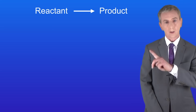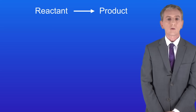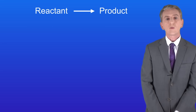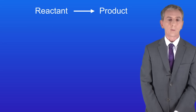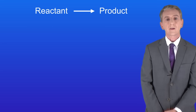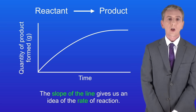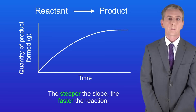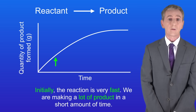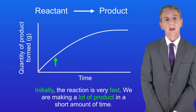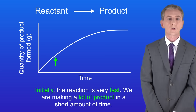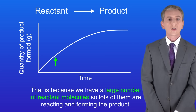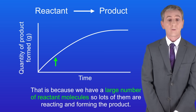I'm showing you a chemical reaction here. As you can see the reactant is turning into the product. If we plot the quantity of product formed against time then we get this graph. The slope of the line gives us an idea of the rate of reaction — the steeper the slope the faster the reaction. Initially the reaction is very fast, as we're making a lot of product in a short amount of time. That's because we've got a large number of reactant molecules, so lots of them are reacting and forming the product.